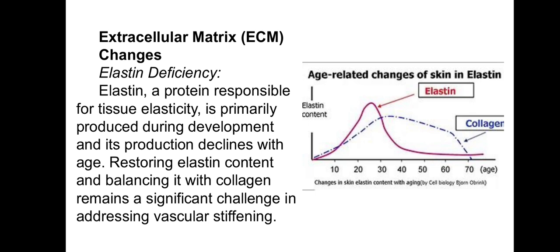Extracellular matrix changes — elastin, a protein responsible for tissue elasticity, is primarily produced during development and its production declines with age. Restoring elastin content and balancing it with collagen remains a significant challenge in addressing vascular stiffening. The picture shows that elastin content is maximum around age 25, but then sharply decreases while collagen is increasing. We have to understand why elastin content is dropping and what we can do to slow down the degradation of elastin fibers and maybe produce new ones.